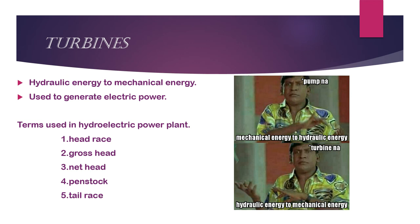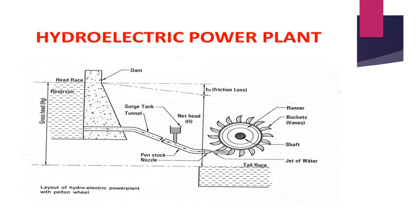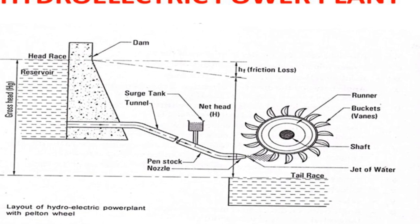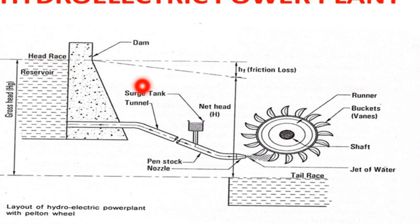Let's look at the dam installation. This is the dam — this is the upstream side, this is the downstream side. There is a height difference between the tail race and the head race. We call this the gross head.